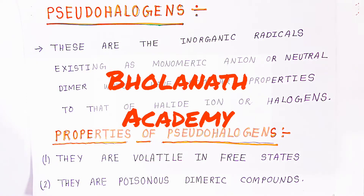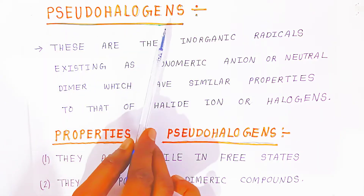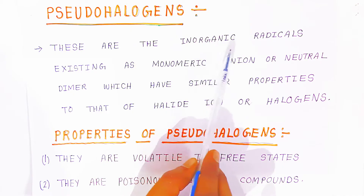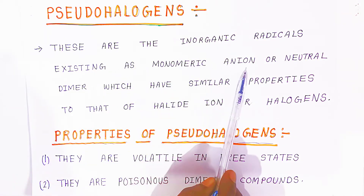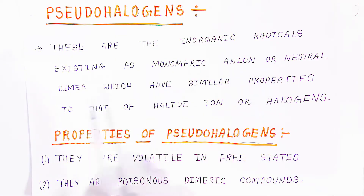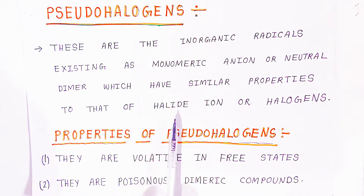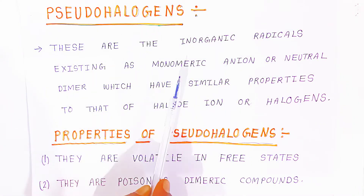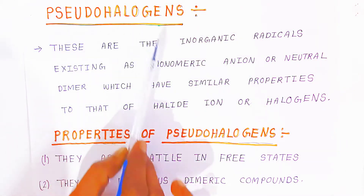Welcome to Bholanatha Academy. In this video we are going to see pseudo halogens. What are the pseudo halogens? These are the inorganic radicals — the inorganic word is very important — existing as monomeric anions or neutral dimers which have similar properties to that of halide ions. It is not a halogen, but it looks like halide ions. That is why it is called pseudo halogens.